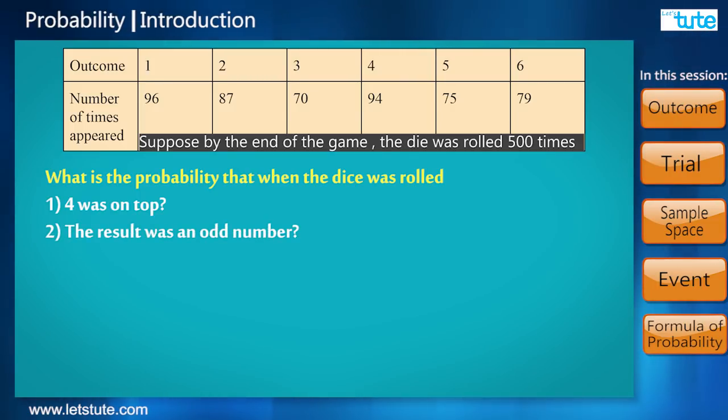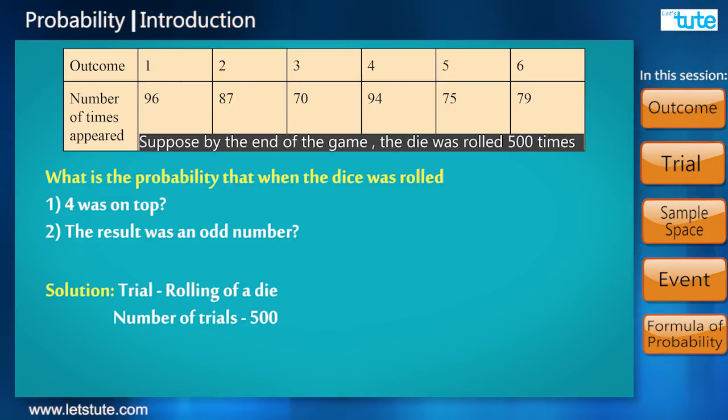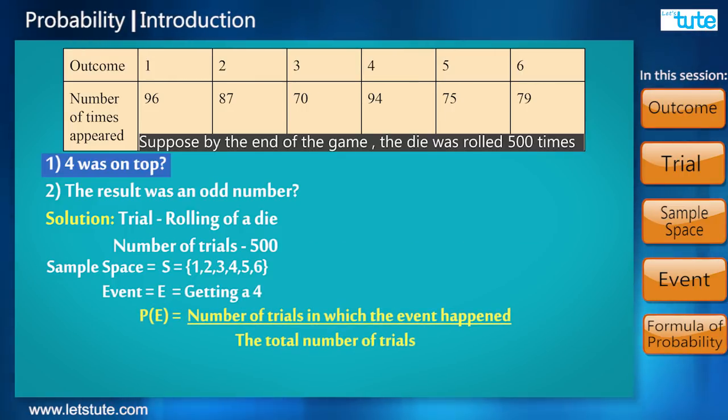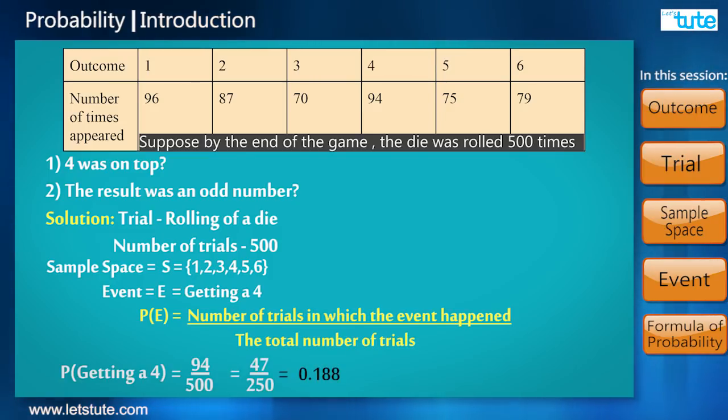What is the probability that when the dice was rolled, 4 was on top, or the result was an odd number? Here the trial is rolling of a dice. The number of trials is 500. The desired event is getting a 4.